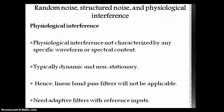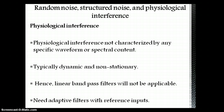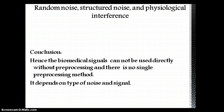We use adaptive filters with reference inputs for removing physiological interference types of noise. Hence, biomedical signals cannot be used directly without pre-processing. There is no single pre-processing method for removing all three different types of noises. The pre-processing method depends on the type of noise — whether it is structured noise, thermal noise, or physiological interference — and it also depends on the type and strength of the signal.